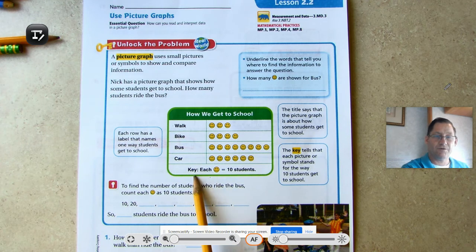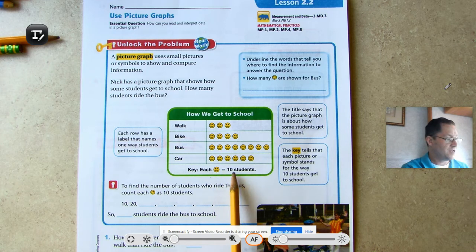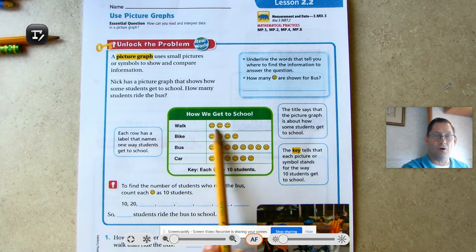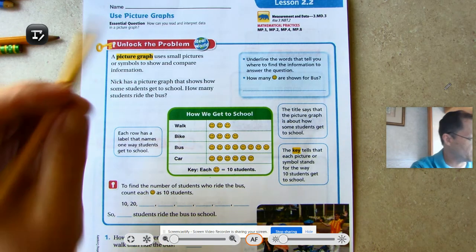Each of these happy faces is a symbol. It's very important that we recognize what each of the symbols mean. For every happy face on here, it equals 10 students. So it is not three people that walk, it's 10, 20, 30 people that walk.